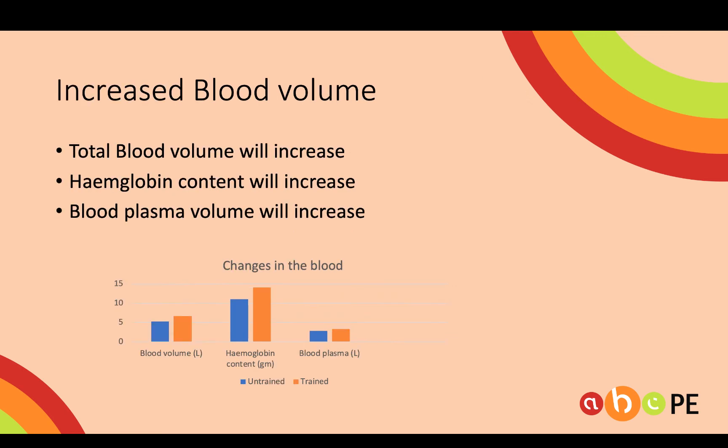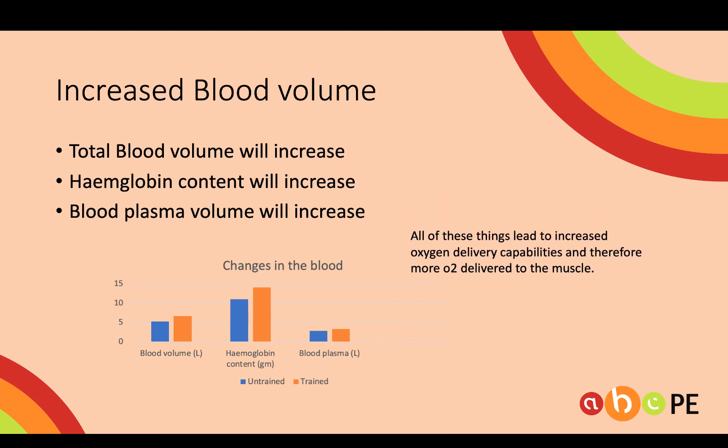Finally, there's increased blood volume — total blood volume increases from about 5.5 litres to 6.5 litres. Haemoglobin, the oxygen-carrying component of the blood, will also increase, and total blood plasma will increase too. Greater total blood volume means more room for oxygen to be carried; more haemoglobin means more carriers of that oxygen; and more blood plasma means the blood will move quicker through the body because it's less viscous — thinner — allowing it to get through blood vessels faster.